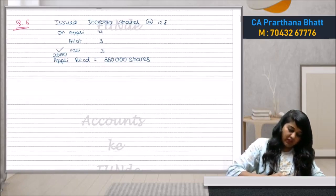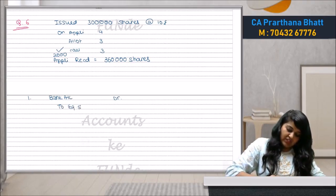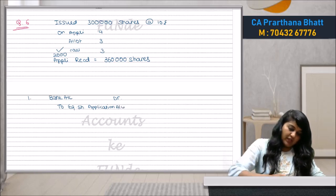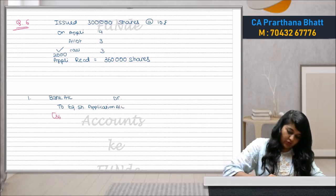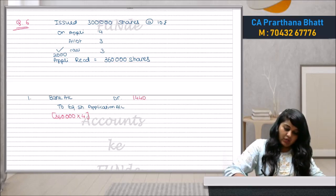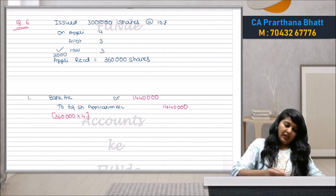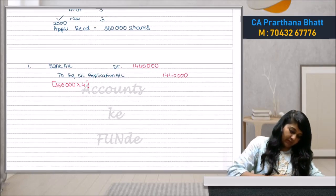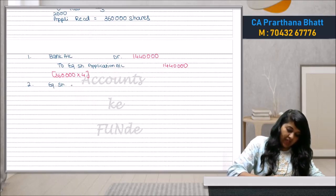Let us start the question with our first basic journal entry: Bank Account debit to Equity Share Application Account. As of now only application money has been received. The amount is 3,60,000 × ₹4 = ₹14,40,000.